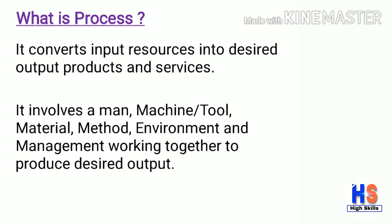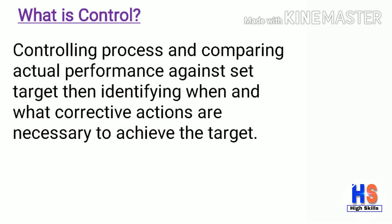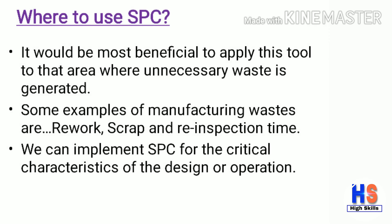Next, what is 'Process'? A process converts input resources into desired output products and services. It involves man, machine, tool, material, method, environment, and management working together to produce the desired output. Next, what is 'Control'? Controlling a process means comparing actual performance against a set target, then identifying when and what corrective actions are necessary to achieve the target.